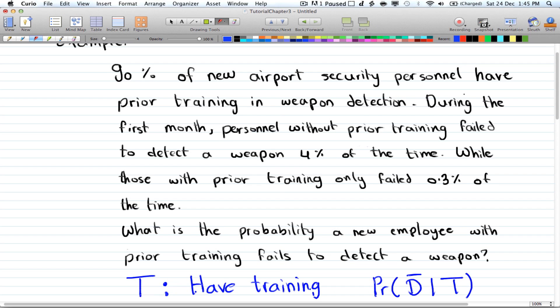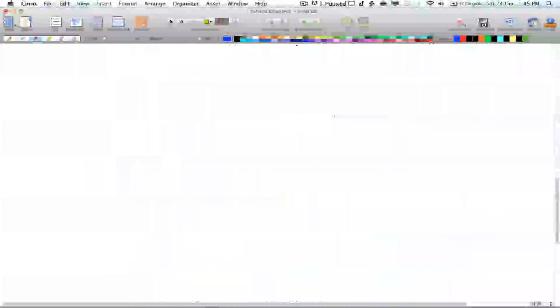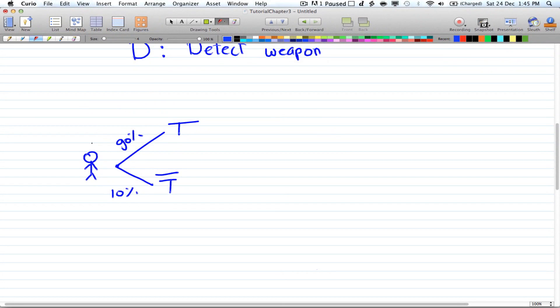All right, and during the first month, personal without, so notice here it's without prior training, they failed 4% of the time. So those without, so here without training,